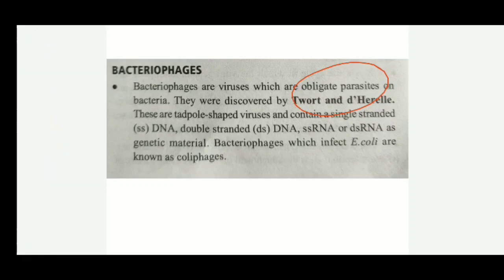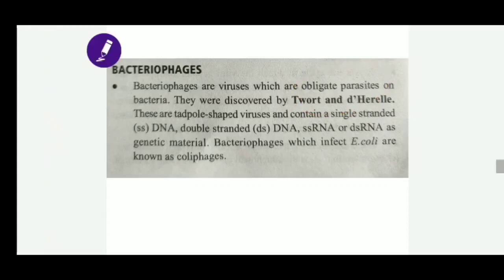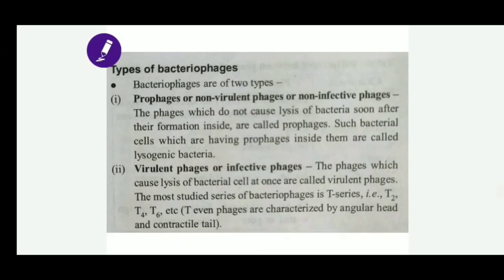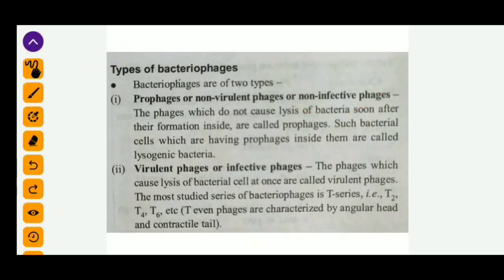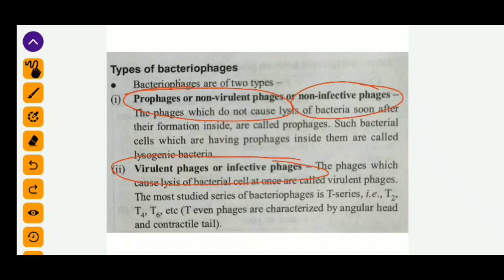Viruses that only infect E. coli are called coliphage. On the basis of their life cycle, bacteriophages are further divided into two types: non-virulent (prophage) or non-infective phage, and virulent or infective phage. Non-virulent phage does not cause lysis or destroy the host. Virulent phage, such as T2, T6, and lambda phage, destroy the host cell and cause lysis.